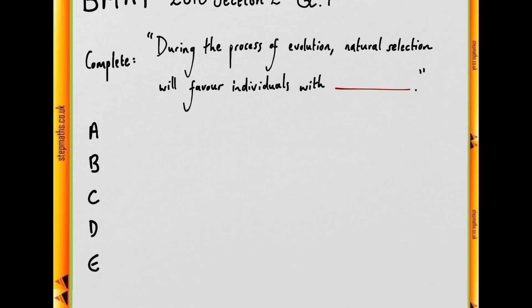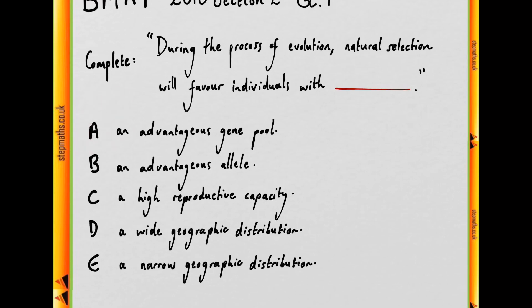Okay, let's see what could fill in the blank. We'll start with A. Does natural selection favor individuals with an advantageous gene pool?